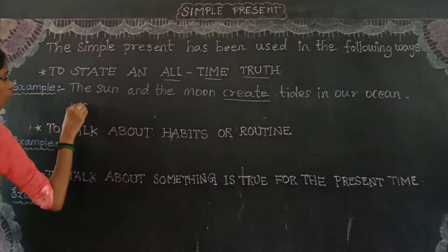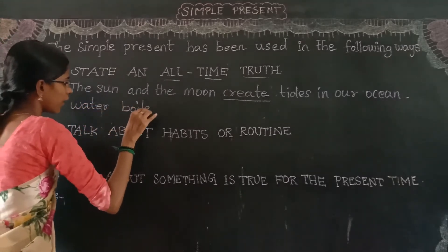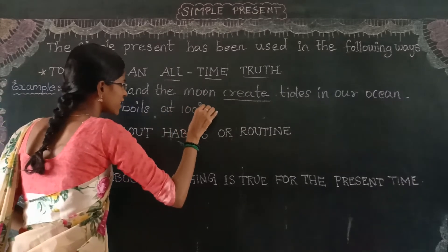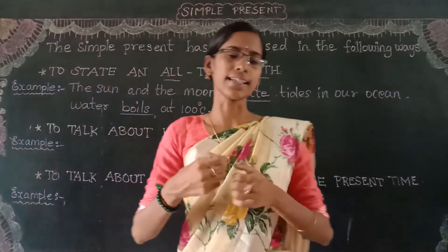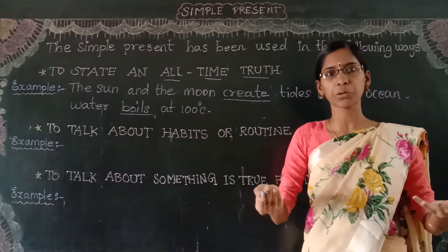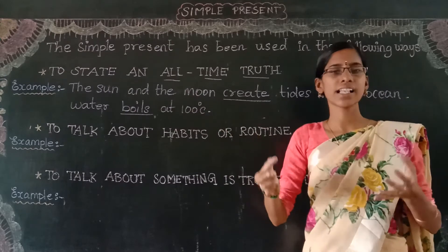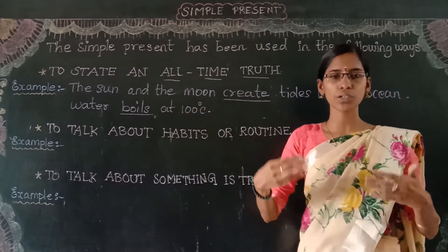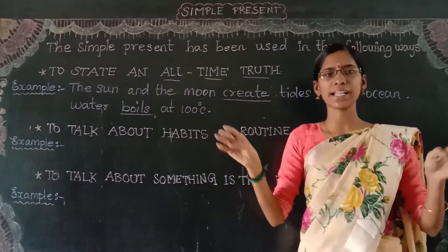See here, the verb is 'boils.' Water boils at 100 degrees Celsius — of course, it is a universal truth. Water boils when it reaches 100 degrees Celsius, and it cannot be changed. So if you are talking about a universal truth or all-time truth, you have to use the simple present form.